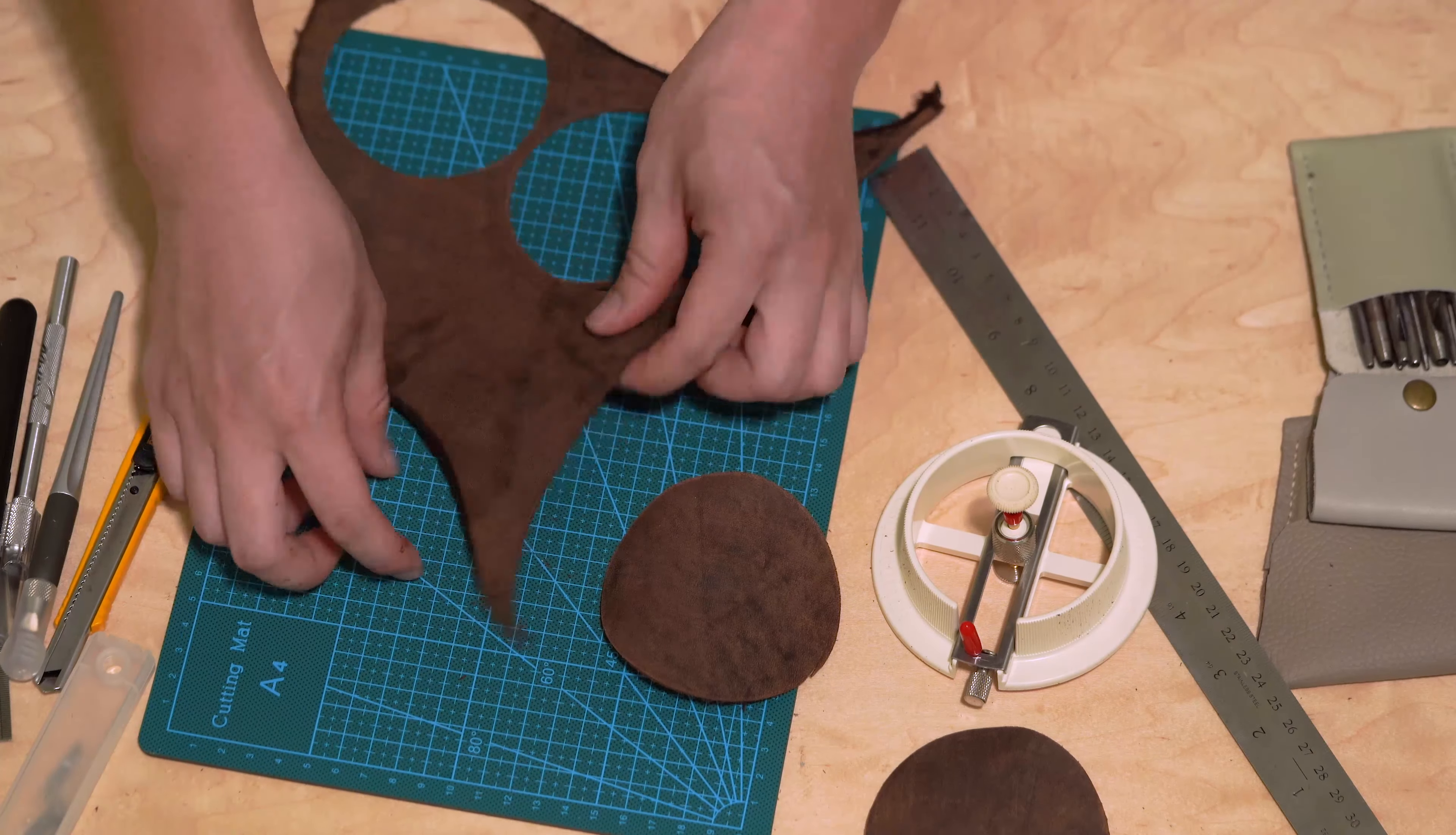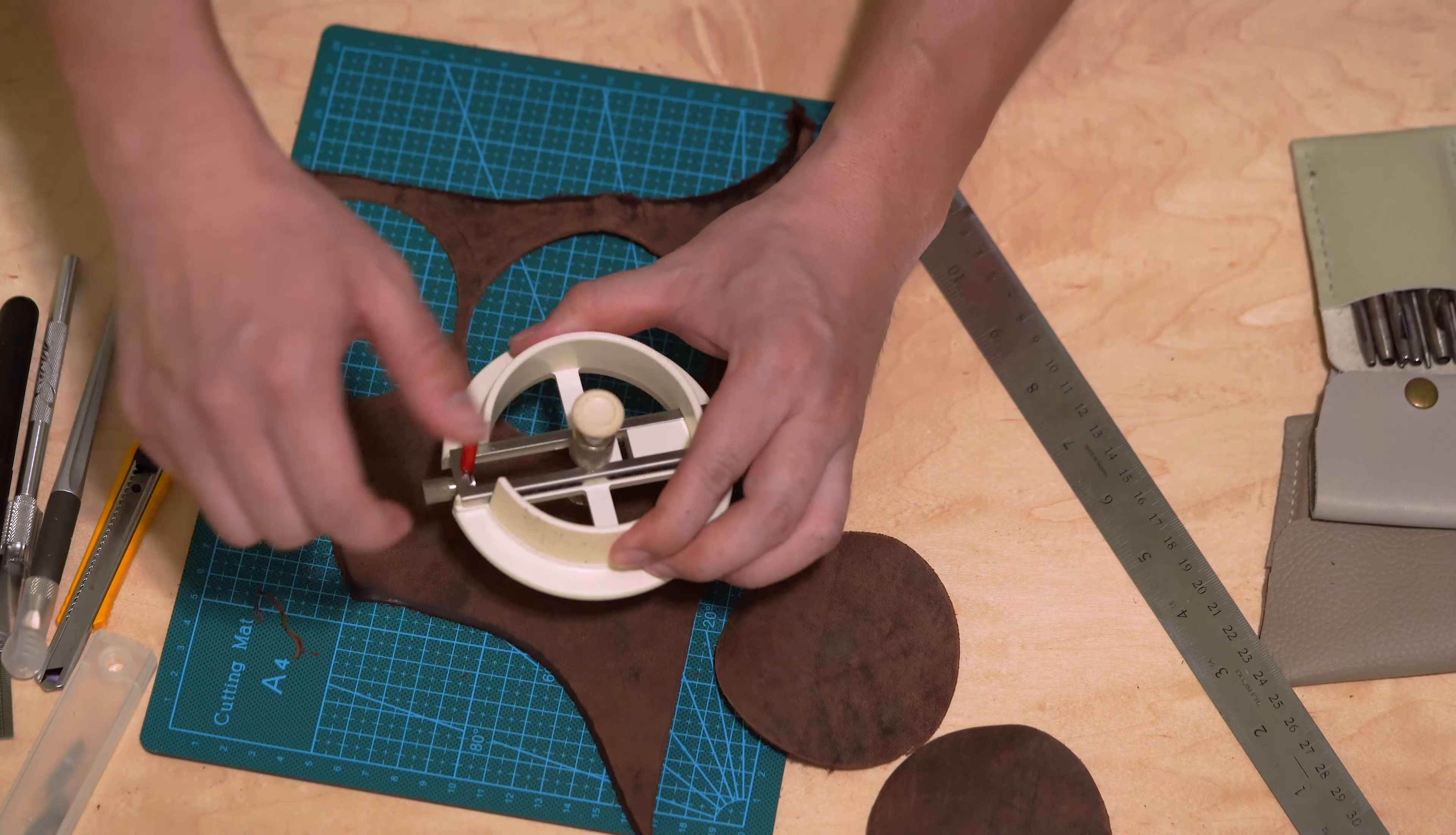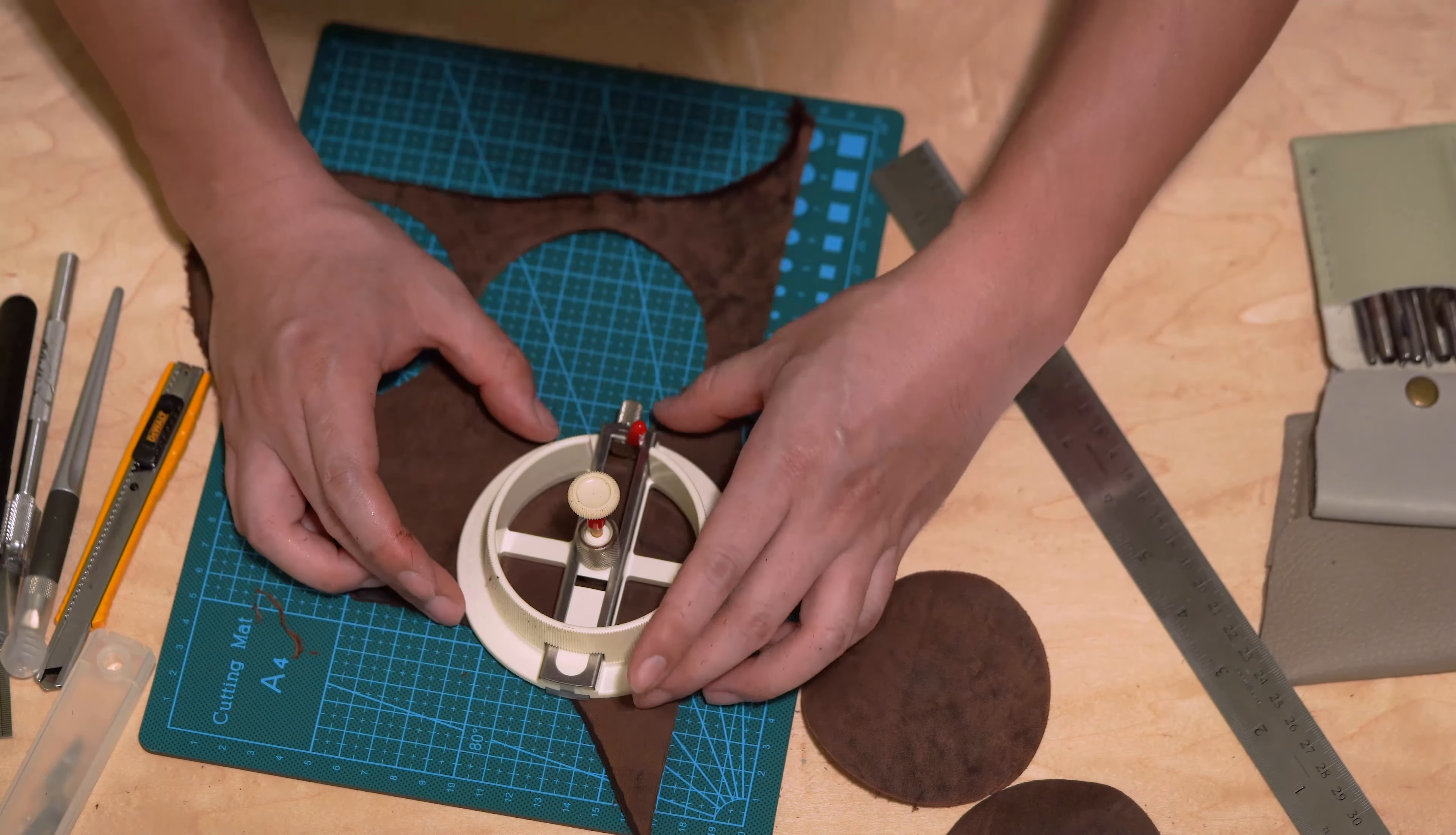Then I can probably cut one more using the extra space over here by adjusting the blade a little bit smaller to maximize the usable area.